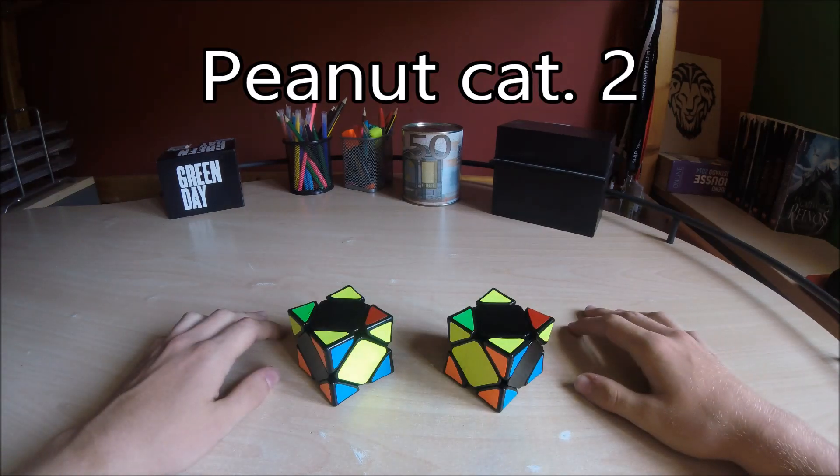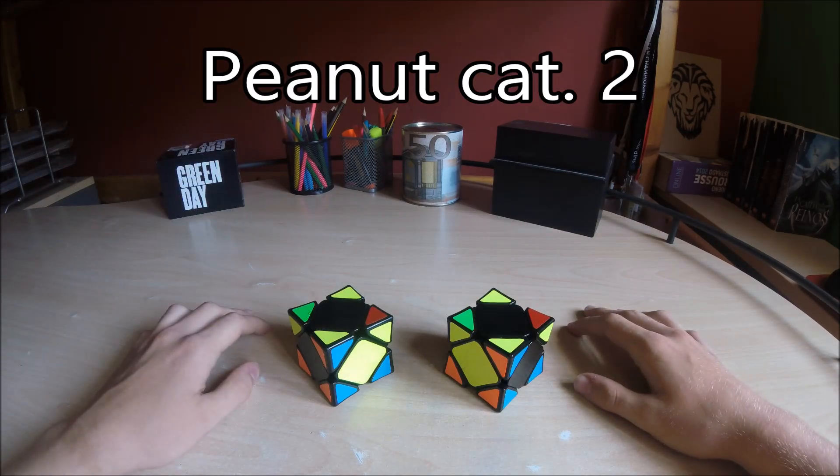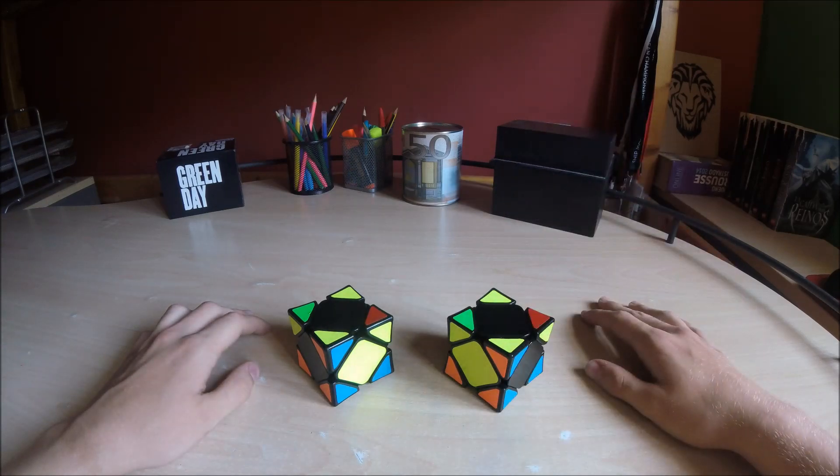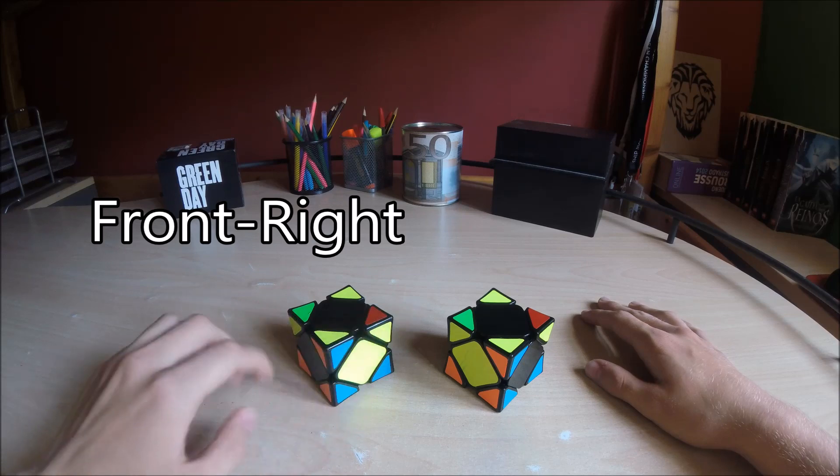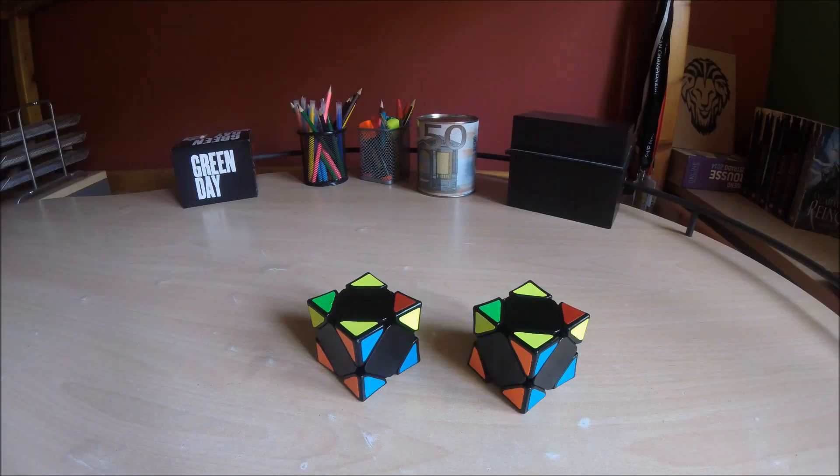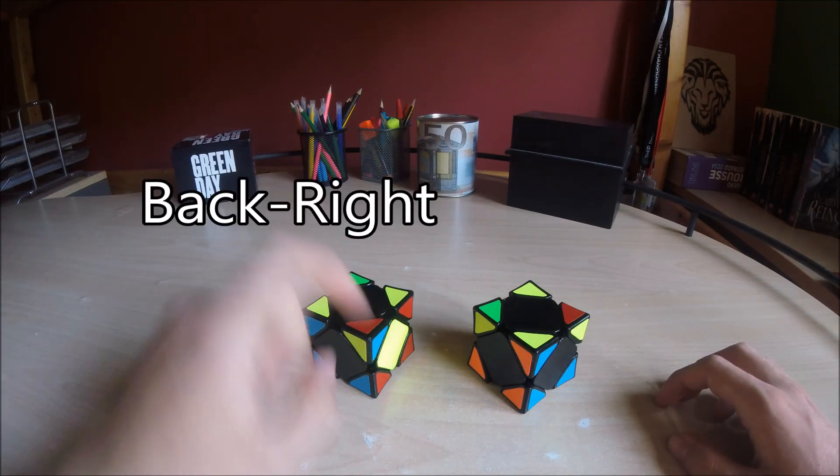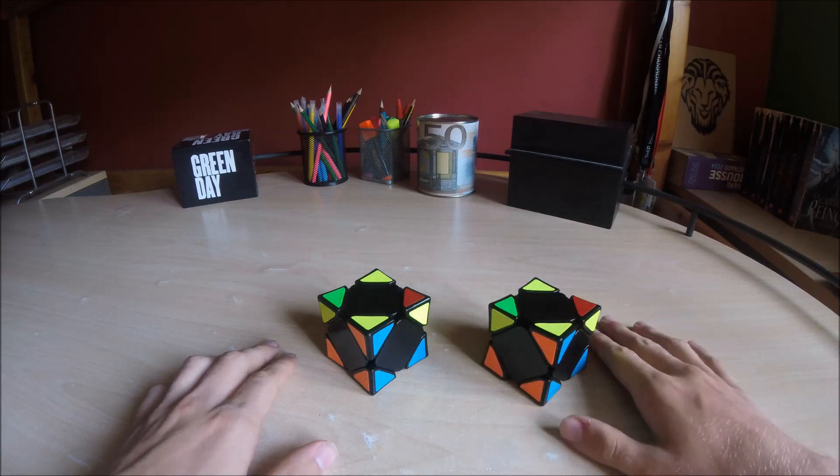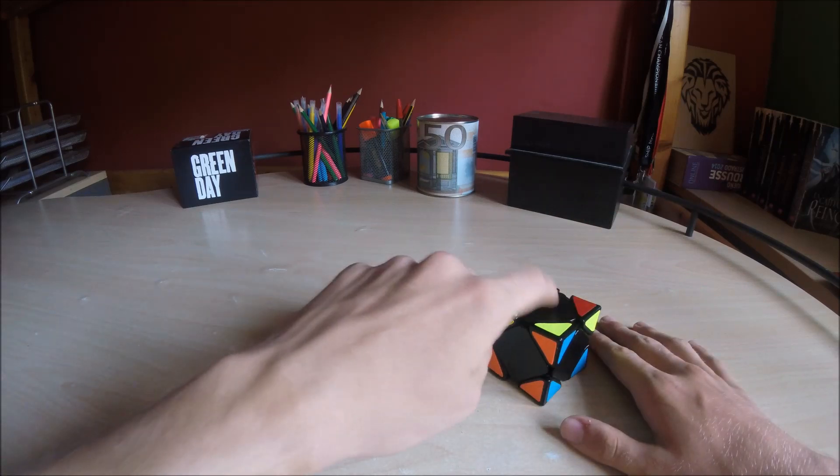And the Peanut case category 2. There are 48 cases and 4 patterns: if the center is on the front right, on the front left, on the back right, or in the back left. There are also 12 cases in each one.